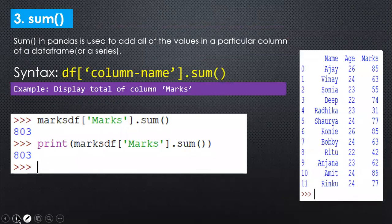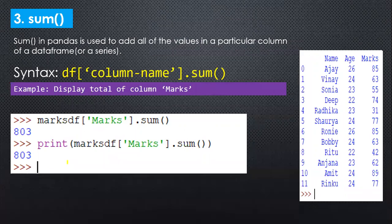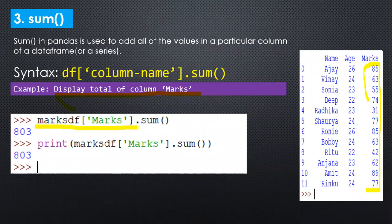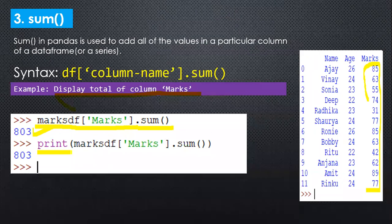Third is sum. Sum is used to find out the total of all values in a particular column. For example, to display the total of column marks, write marks_df['marks'].sum() — your answer is 803. You can check it manually. You can also use the print command in a program; the answer will be the same, 803.